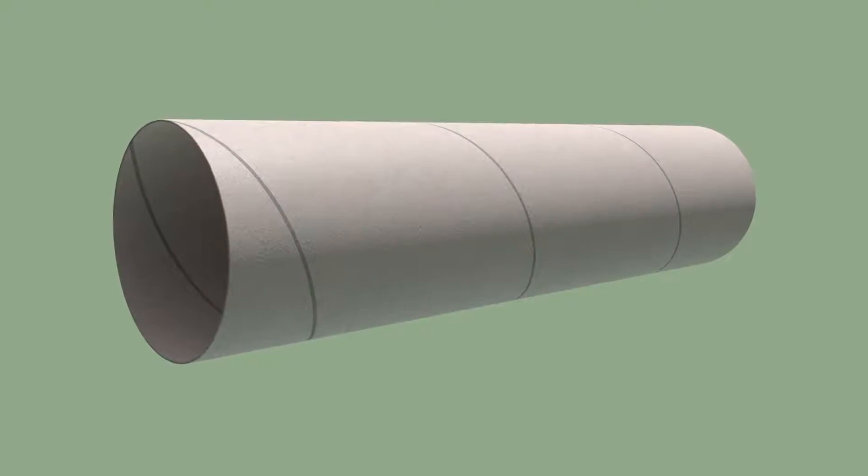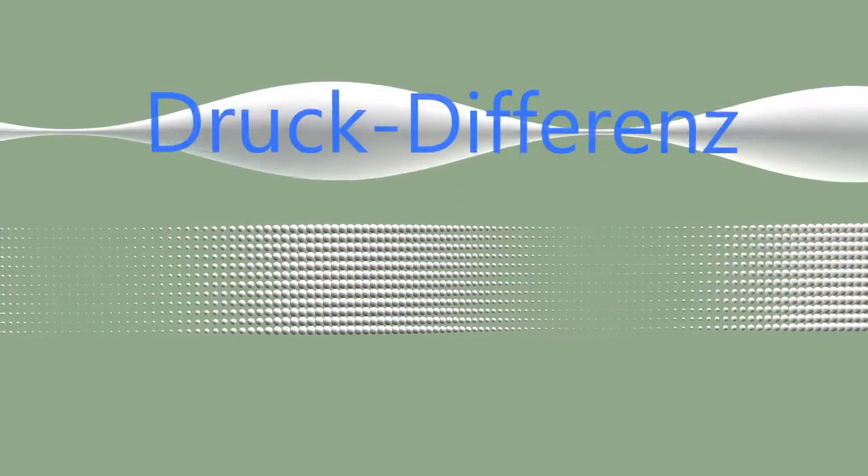Hits to the cardboard tube make the air in it oscillate, causing a sound. Such sounds are pressure, i.e., longitudinal waves.